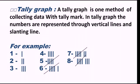A tally graph represents the number of occurrences — we give marks by lines to show how many times something occurs. There is a method for giving tally marks. Observe the examples: number one is one vertical line, two is two vertical lines, three is three vertical lines, four is four vertical lines. Five is represented by four vertical lines and one slanting line. For six, you use one group of four vertical lines and one slanting line — that is five — and then one additional vertical line. In this way you give the tally mark, grouping every five.